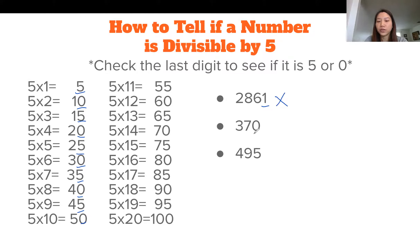If you look at 370, the last digit is 0, so that means it is divided by 5. Similarly, for 495, the last digit is 5, so that is, again, divisible by 5.